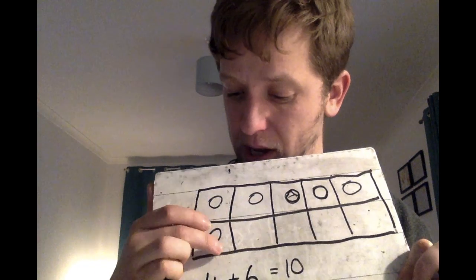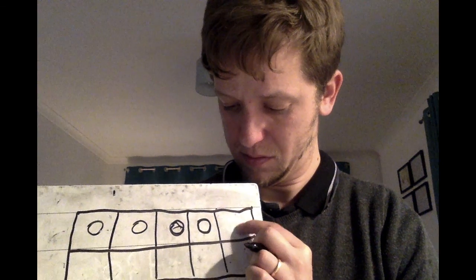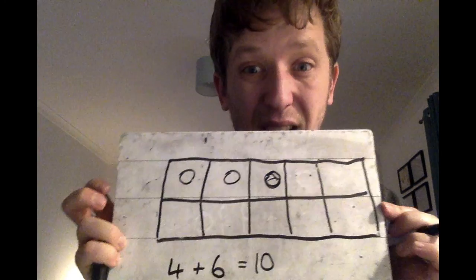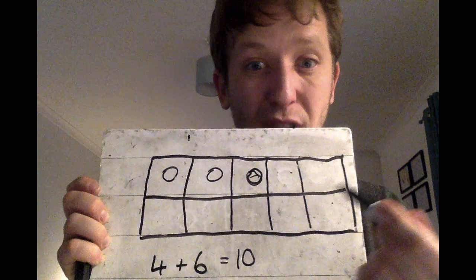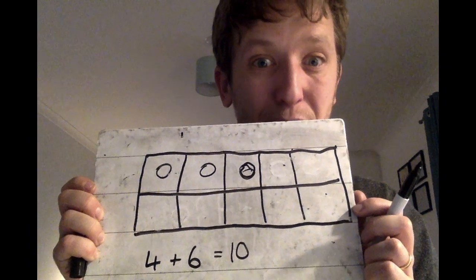If I see this number, I don't have to count them. I know that top row would be five. Two of them are empty. So what's left is three.